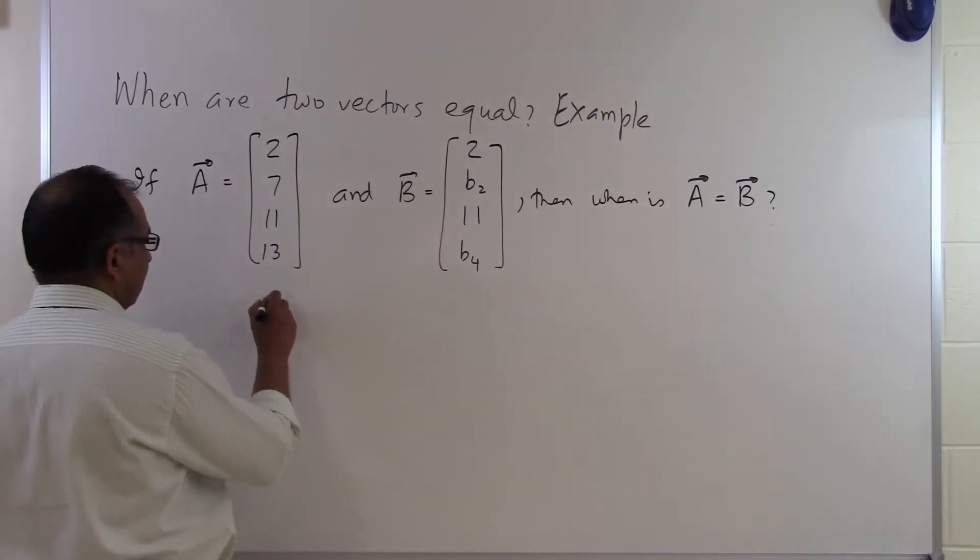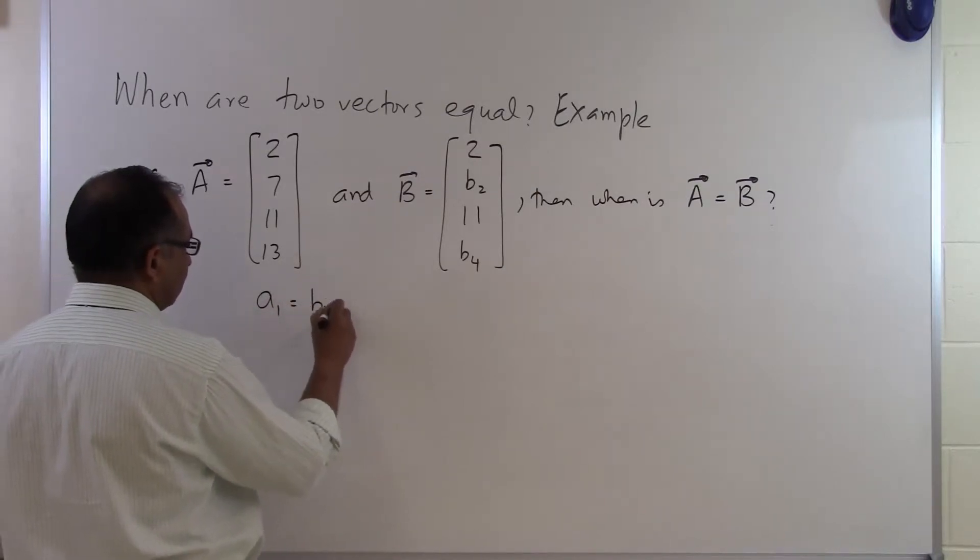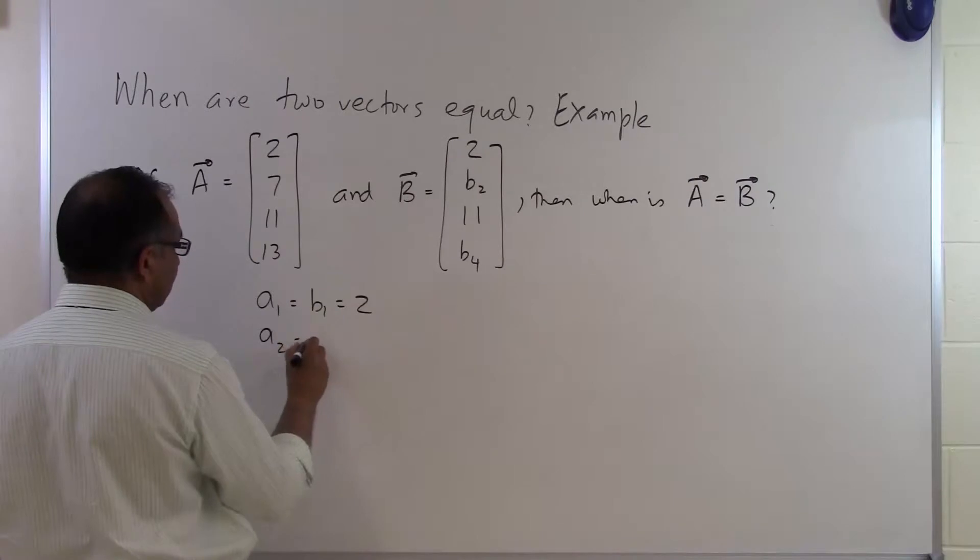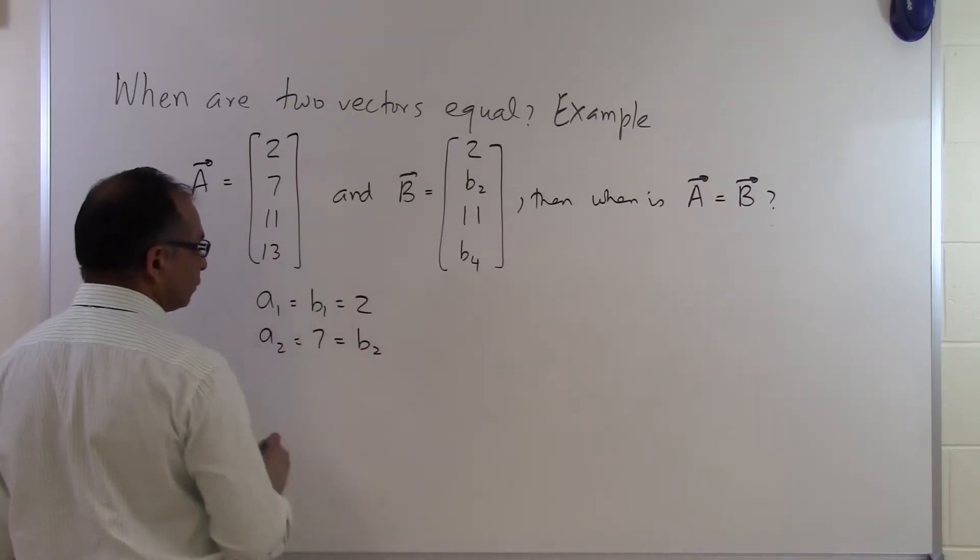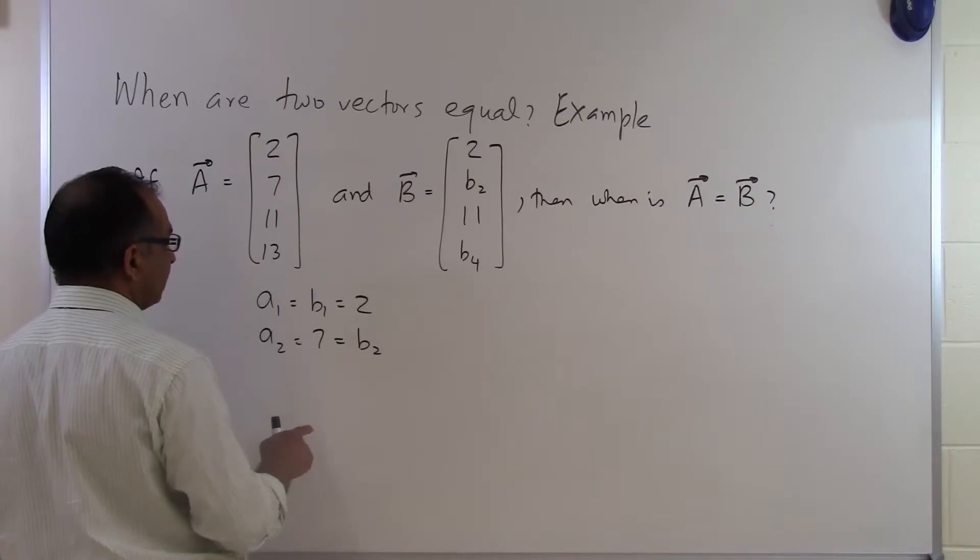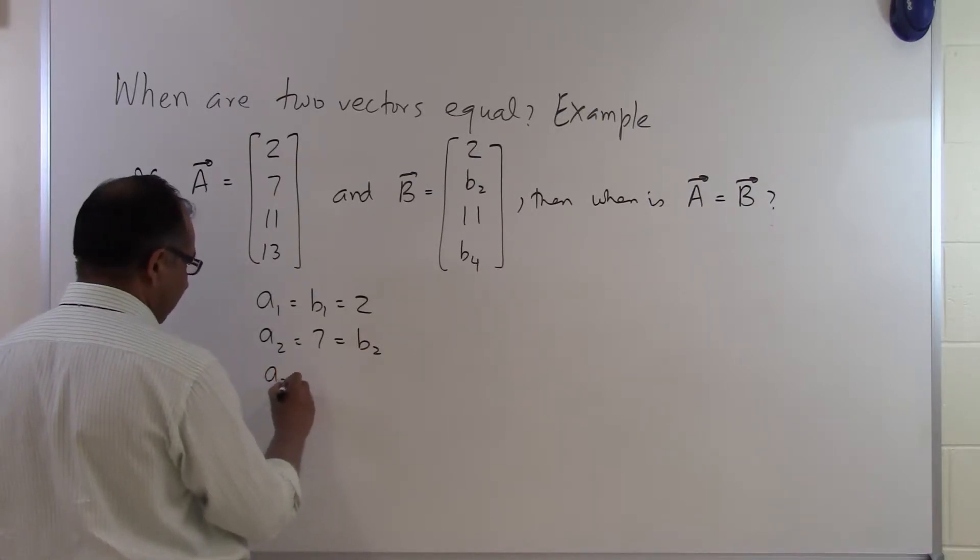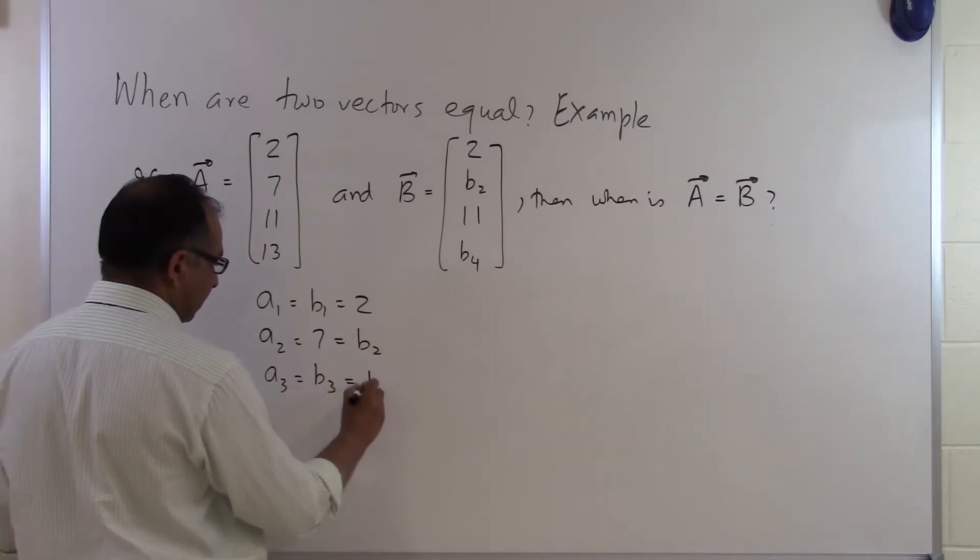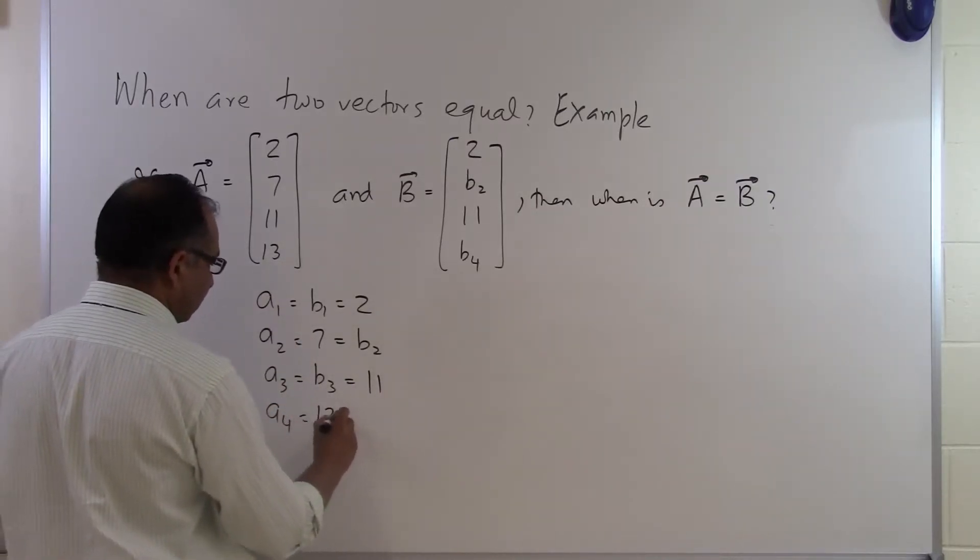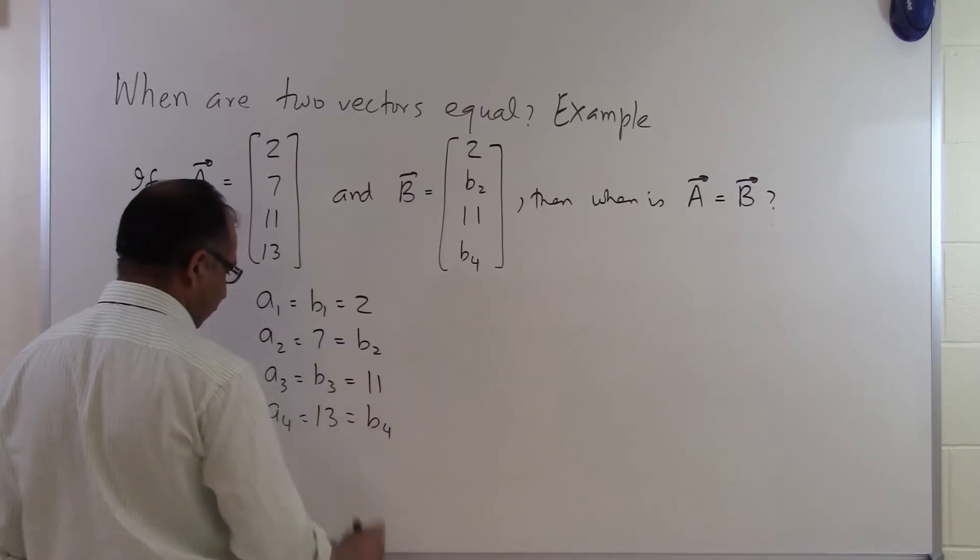We find that A1 equals B1 equals 2. Then A2 equals 7, which must equal B2 for the vectors to be equal. A3 equals B3 equals 11, and A4 equals 13 equals B4.